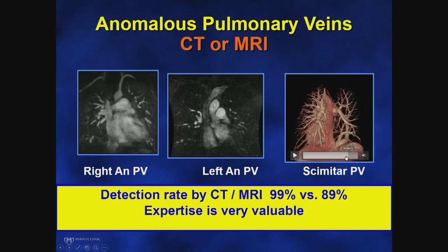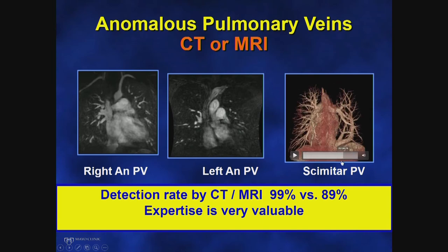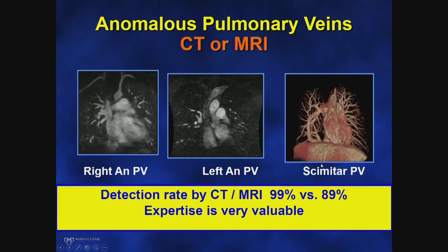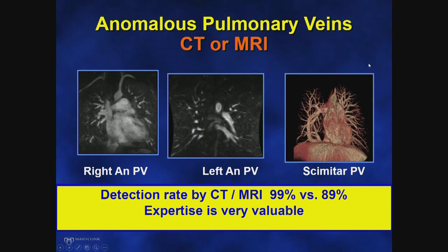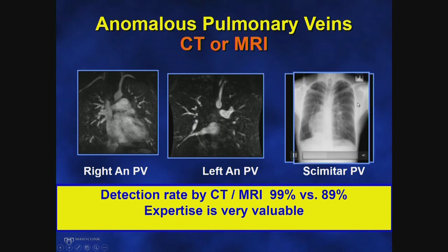On echo, scimitar syndrome is identified from the subcostal view. CT and MRI are excellent diagnostic techniques used to identify anomalous pulmonary veins, especially if they are not seen on transthoracic or transesophageal echocardiogram. On chest X-ray in patients with scimitar syndrome, in addition to the scimitar sign, the heart silhouette is shifted to the right because of dysplasia and hypoplasia of the right lobe of the lung.